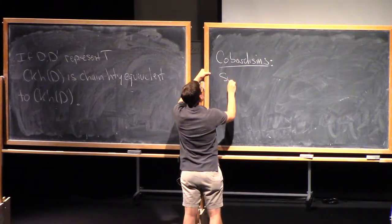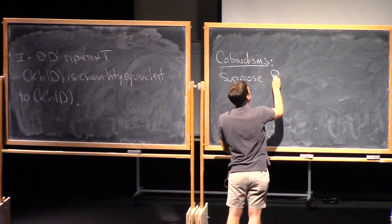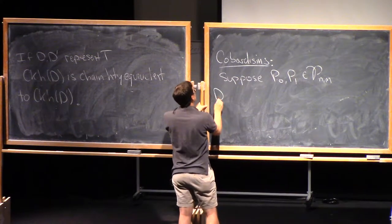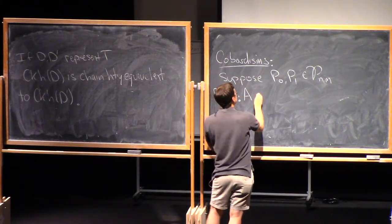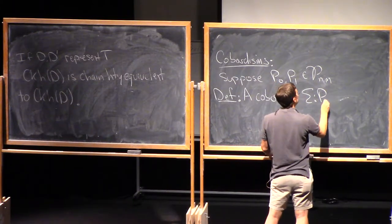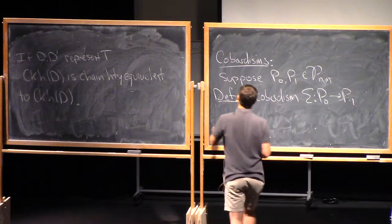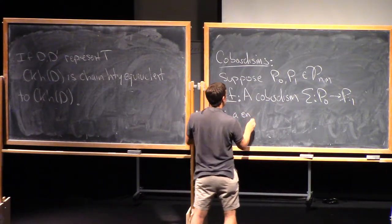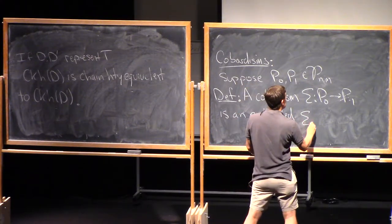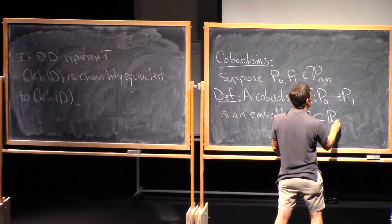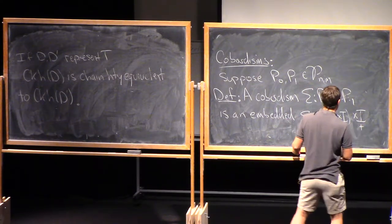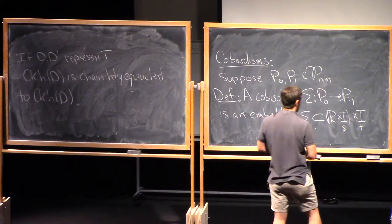Let's suppose P naught and P1 are planar tangles, so say they're in PNM. Definition, a cobordism, let's call it sigma going from P naught to P1, is an embedded, let's say sigma inside of R times I. This is the planar tangles space times another I, sort of in the T direction. I'll call this I coordinate S and this one T.